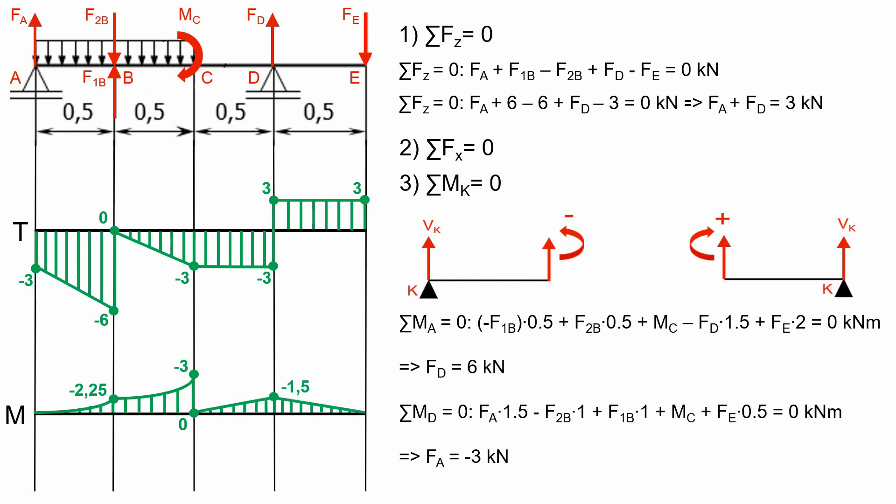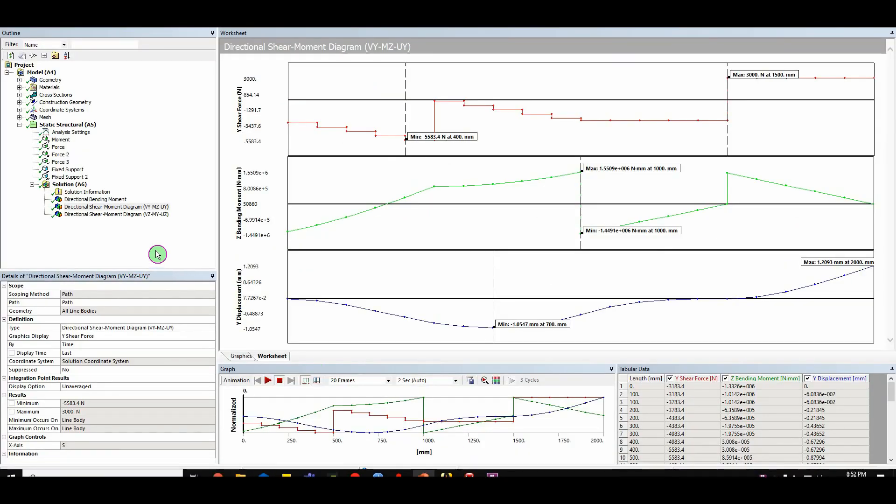If the bending moment diagram doesn't close, it means there are some calculus mistakes in the equilibrium equations and we have to calculate the reactions again. To check the accuracy of our results, we will use a dedicated software and we will do a brief comparison between what we calculated analytically and what we got from the program.